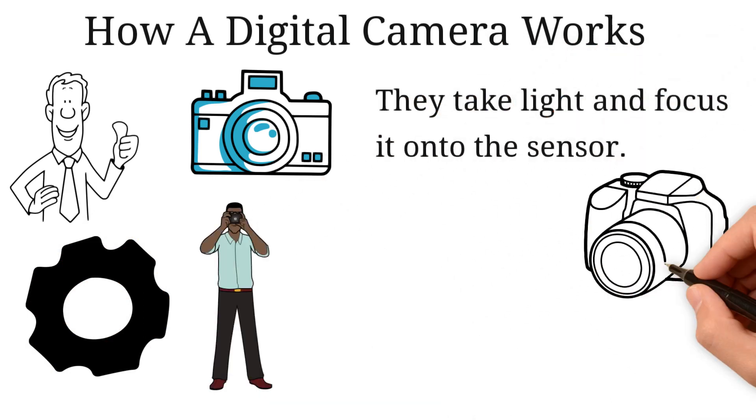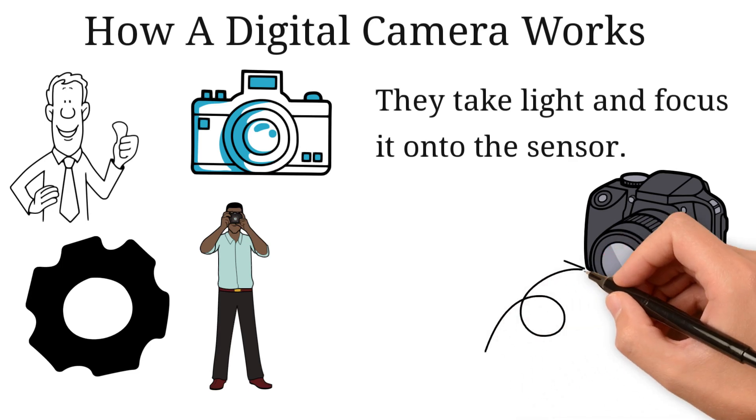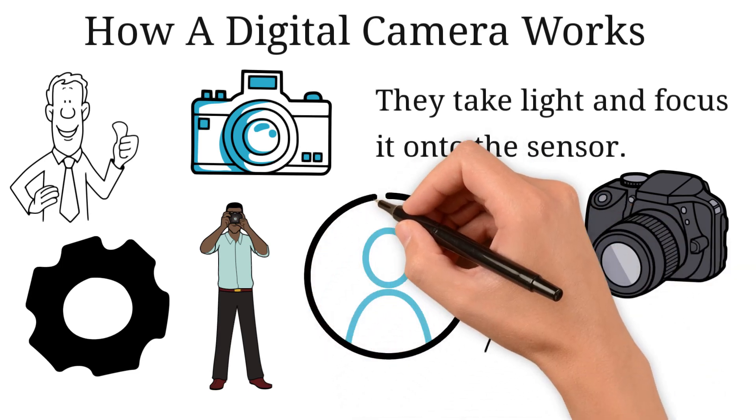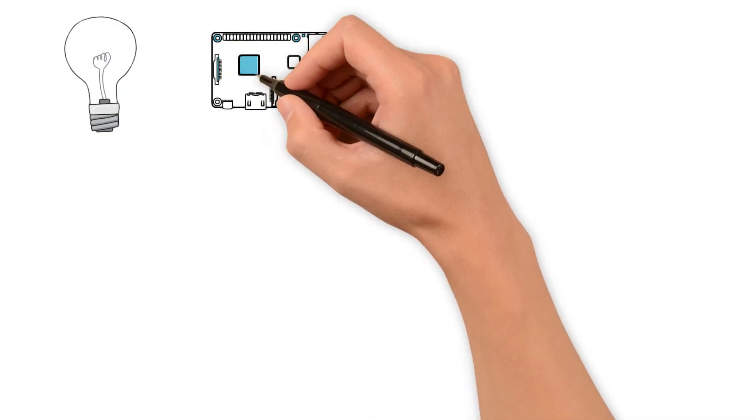When you take a photo, aperture opens and light comes in through the lens. This happens after the light zooms into your lens from the thing you are photographing. After the light comes through the lens, it is met with the image sensor chip.